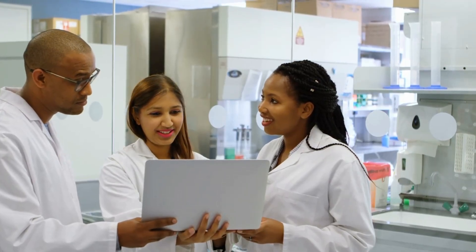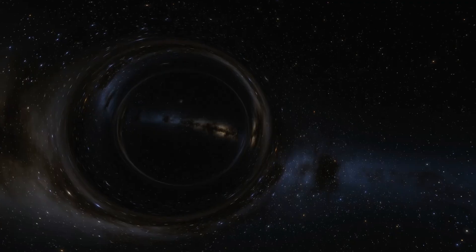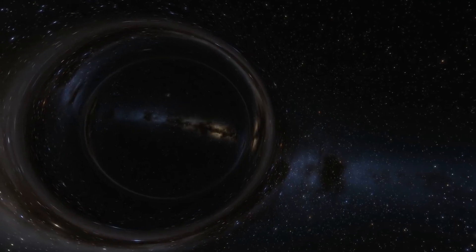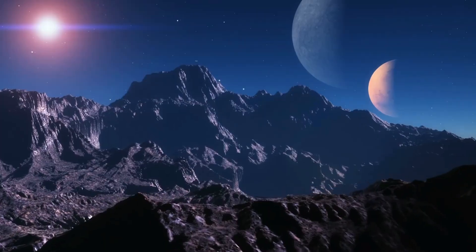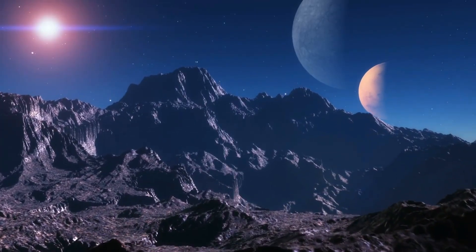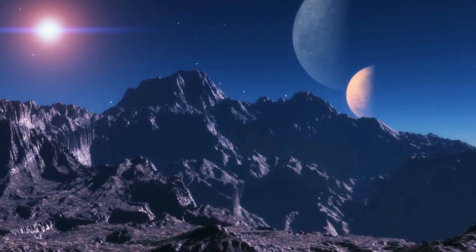To test this theory, astronomers and physicists are exploring several strategies. One possibility is to look for gravitational microlensing effects, where the primordial black hole would pass in front of a distant star and its gravity would bend the star's light, creating a lensing effect. This phenomenon could provide direct evidence of the existence of a primordial black hole.